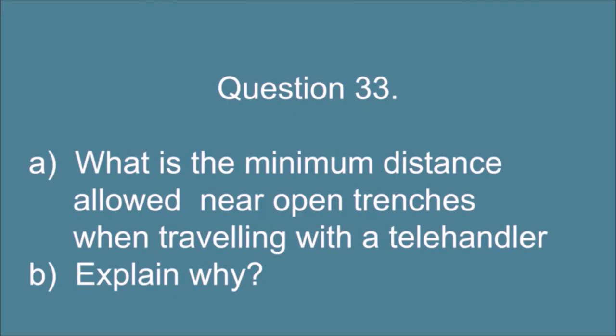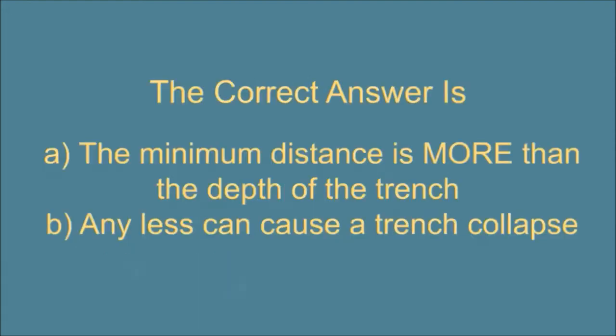Question 33. A. What is the minimum distance allowed near open trenches when traveling with a telehandler and B. explain why? The correct answer is: A. The minimum distance is more than the depth of the trench. And B. Any less can cause a trench collapse.